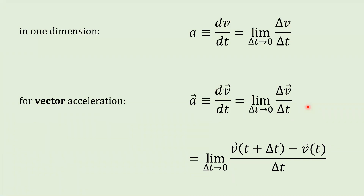We're right back to talking about the difference quotient. We've got a function of time — in this case, velocity. We're looking at the change in that function over a time interval and dividing by that time interval. Our independent variable is t and our function is v(t). This is still the difference quotient, and we're analyzing the limit of that as delta t goes to zero. That's what we call vector acceleration.